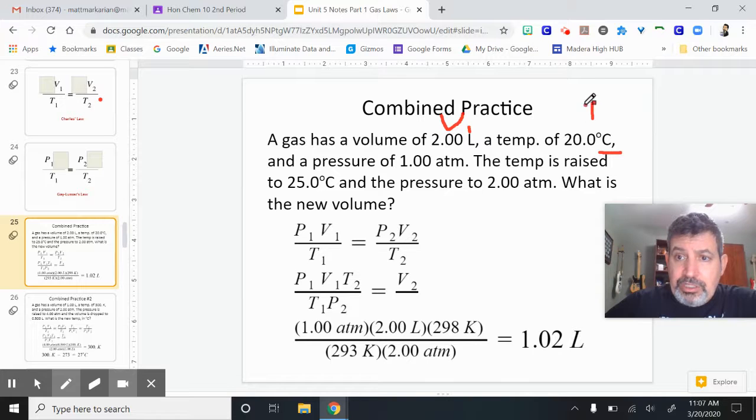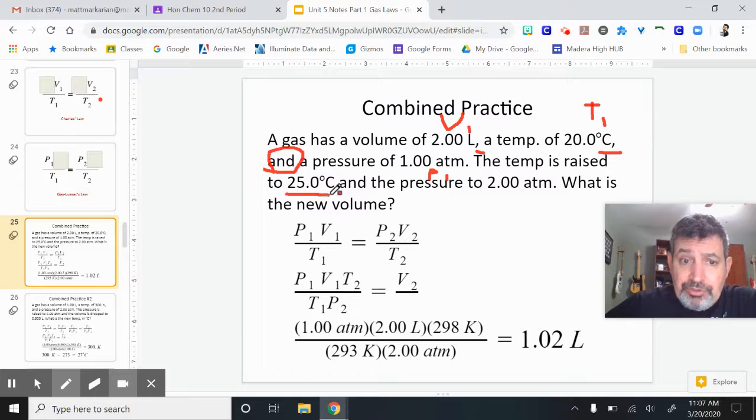And I have a pressure that's P1. All of those are together - you've got commas. Use your English skills. It'll help here. And the 'and' tying everything together. Temperature is raised to 25 degrees Celsius. That's going to be T2. And the pressure is 2.00 atm - that's P2. They're asking for the new volume, which is V2.